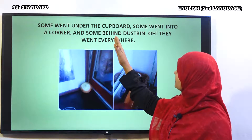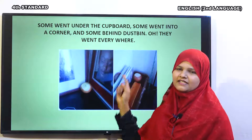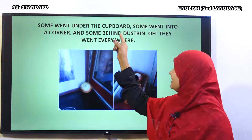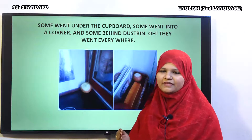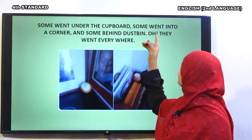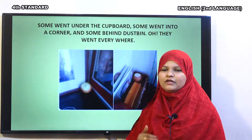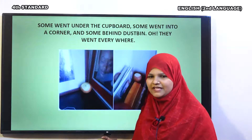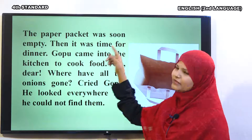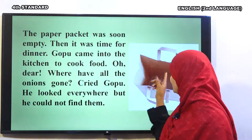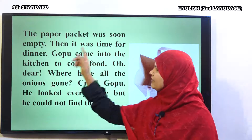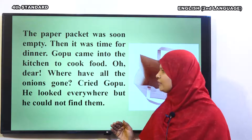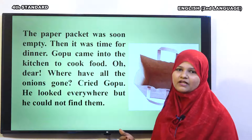Some went under the cupboard. Some went into the corner. And some hid behind the dustbin. Kitchen ke tamaam jagahon par, kono kono mein saari onions phail gayi. And some went behind the dustbin — dustbin jo hota hai kudadaan, uske pichhe bhi kuch onions chhip gayi. Oh! They went everywhere. The paper packet was soon empty. Then it was time for dinner. Gopu came into the kitchen to cook food.